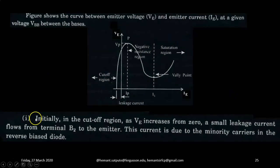Now case one, initially in the cutoff region, this region as V increases from zero, a small leakage current flows from terminal B2 to emitter. So this current is due to minority carriers in the reverse bias diode. And that's why this current is shown negative and it is very small current. This current is negative because on X axis we have got some negative current, because it's a reverse current leakage current.